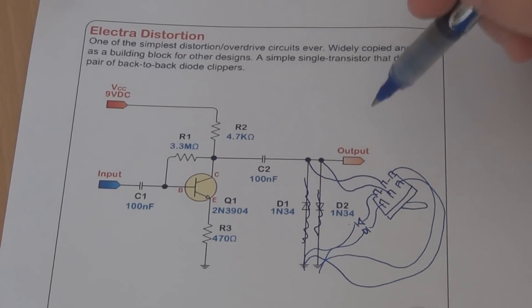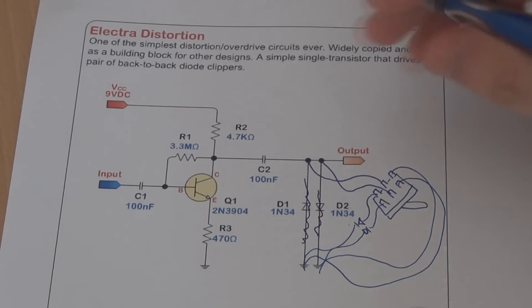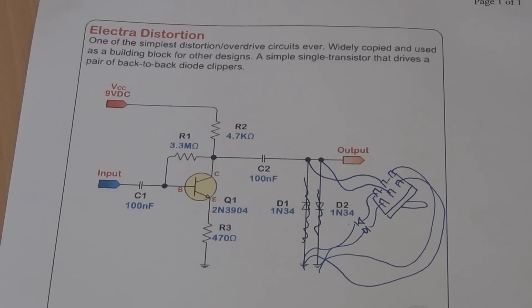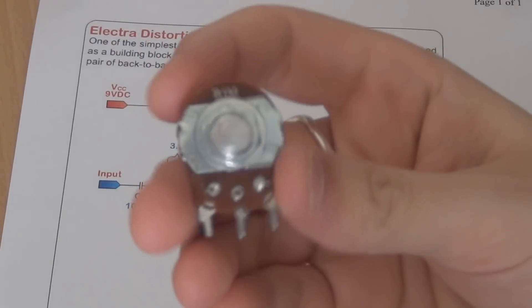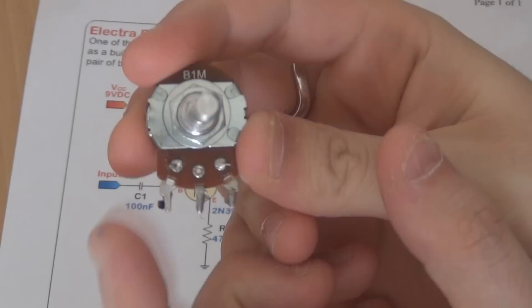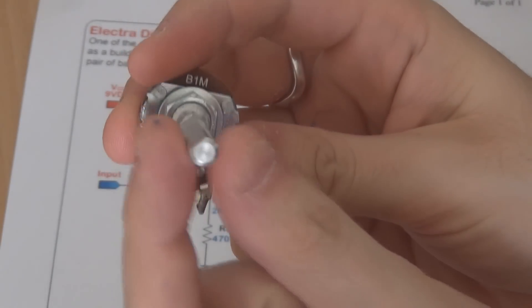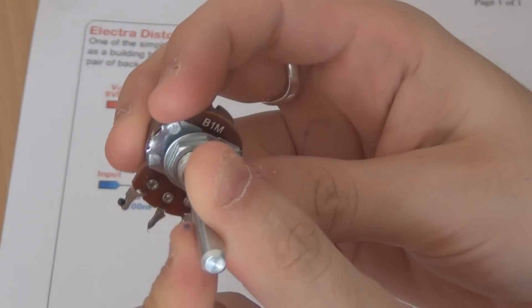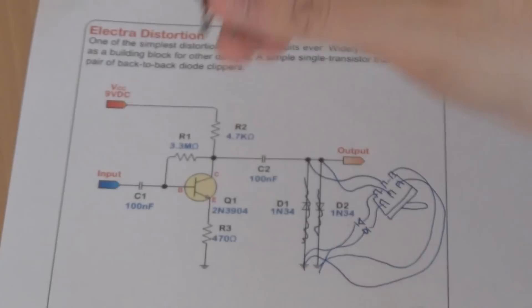So on the output you may have asked, that's great but when I hit the switch I'm going to get a massive volume boost on the output that I can't control. To control that you put a potentiometer on the output. The potentiometer looks like this and it's got three lugs and you read the lugs one, two, three from left to right when you're looking at the face of the potentiometer, the side with the dial on it.